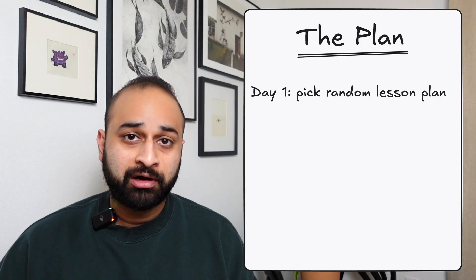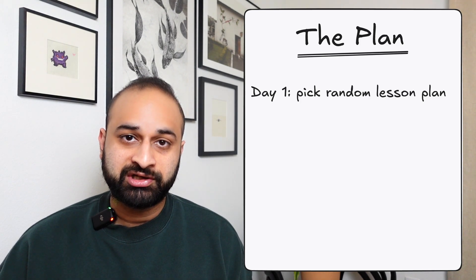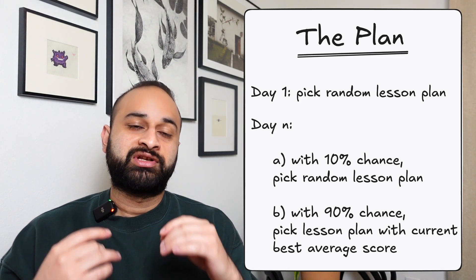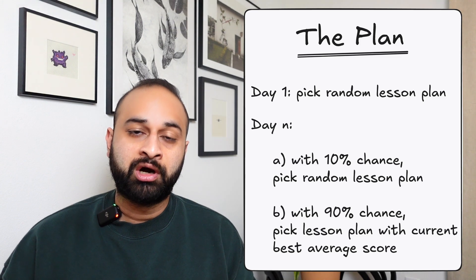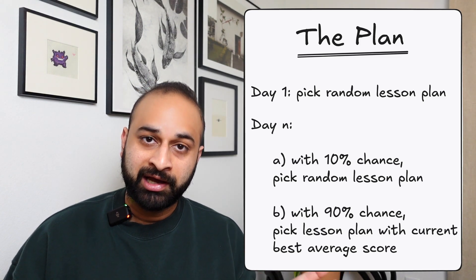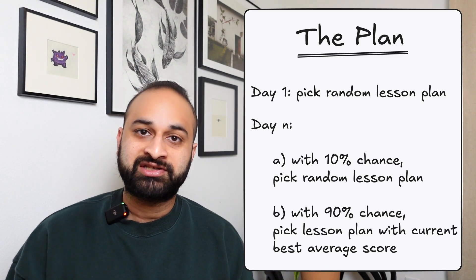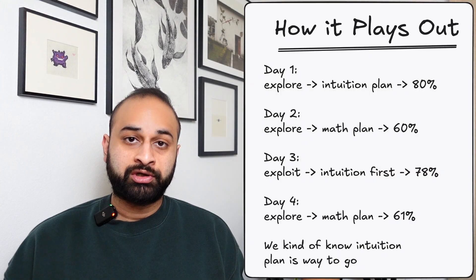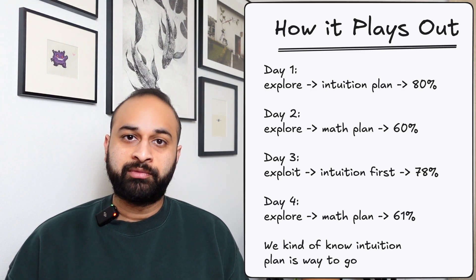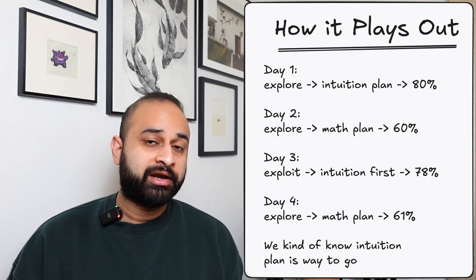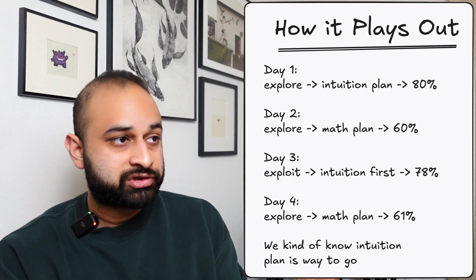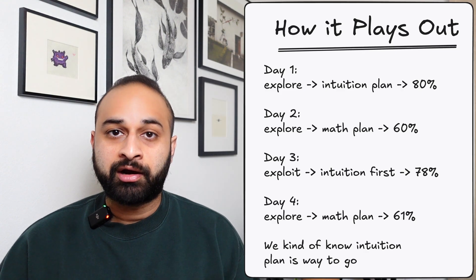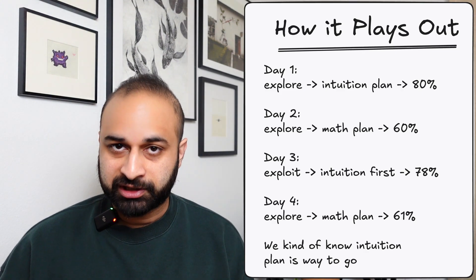All that means is that on any given day there's a 10% chance you randomly select one of the two lesson plans with a 50-50 chance, and then there's a 90% chance you go with the lesson plan that has historically given the best average quiz score. On day one you have no data, so all you can do is explore. You randomly pick the intuition-first lesson plan, administer it, and find the students scored an 80% average on the quiz.